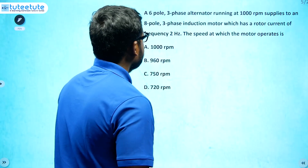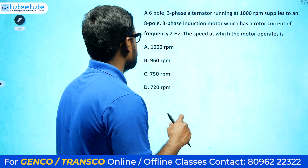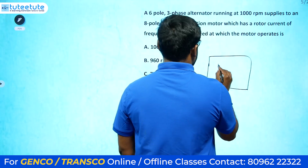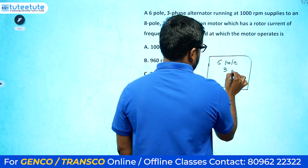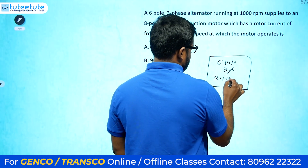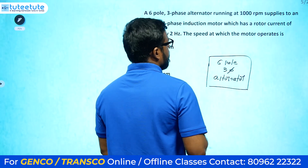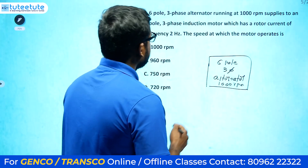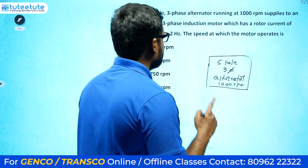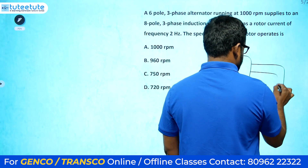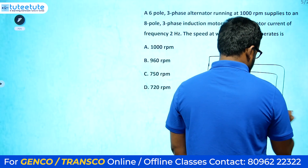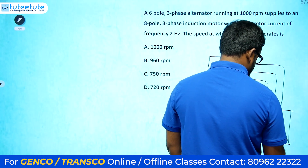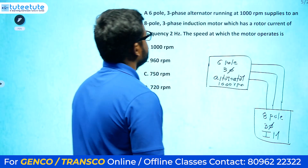Now we will see this question: a six-pole three-phase alternator running at 1000 rpm supplies to an eight-pole three-phase induction motor. The synchronous generator's rotor is running at 1000 rpm, and it supplies to an eight-pole three-phase induction motor.